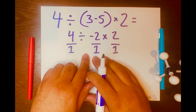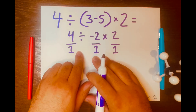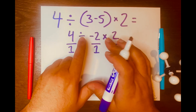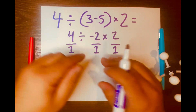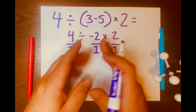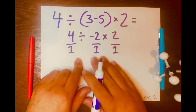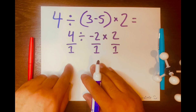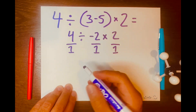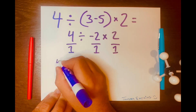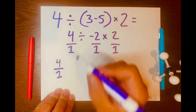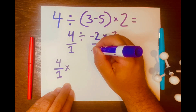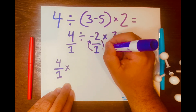And according to PEMDAS, you work from left to right according to its level. We know that division and multiplication are within the same level, so we're just going to work from left to right. So we're going to keep 4 over 1, and we're going to change division to multiplication. Then we're going to flip this fraction, so the 1 will go on top and the 2 will go at the bottom of this fraction.